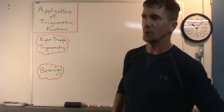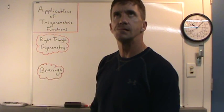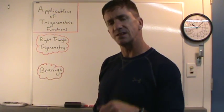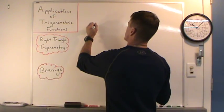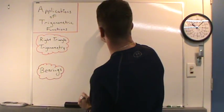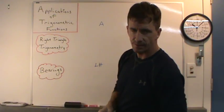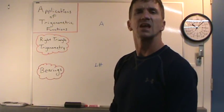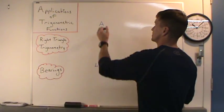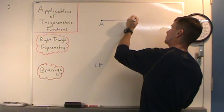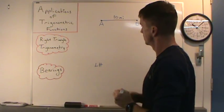You're given a word problem. You're told there are two ships, A and B. There's a lighthouse directly south of Ship A. Ship B is 10 miles east of Ship A. So we'll put Ship A here, go 10 miles east, and place Ship B. There's that lighthouse directly south of Ship A.